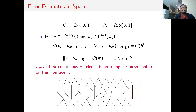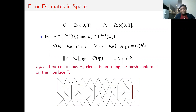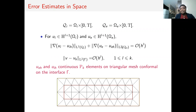Regarding the error estimates in space, we see that the convergence order for the variables U_I and U_E is h^k, and the convergence order is h^k as well for the variable V. However, these error estimates are optimal for U_I and U_E, but they are not optimal for the variable V.